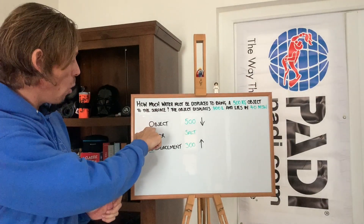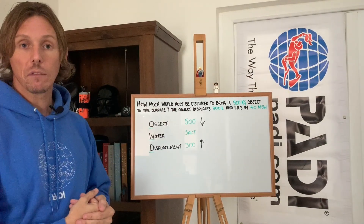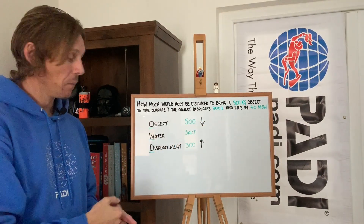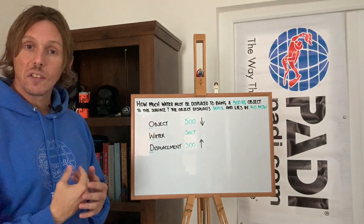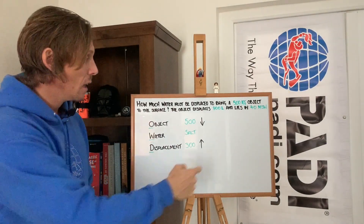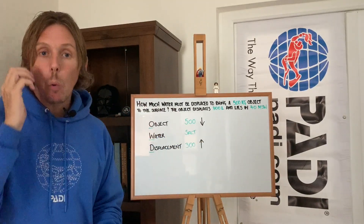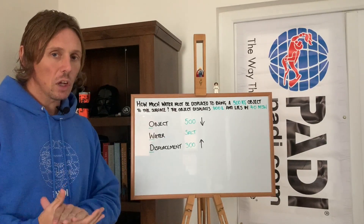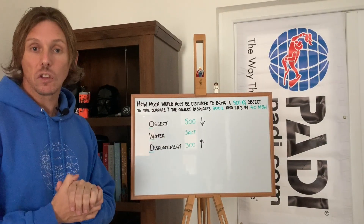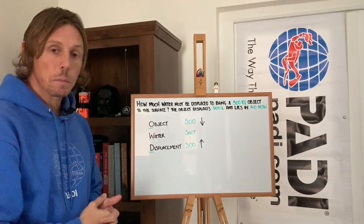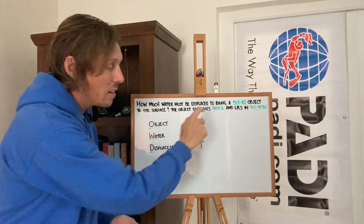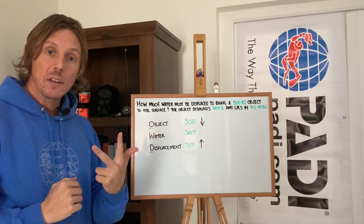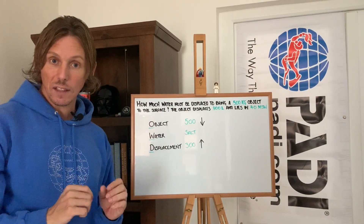Looking at our question: O — object. Does it tell us the weight of the object? Yes, it does — 500 kilograms. W — water. Does it say what kind of water the object sits in? Yes — 40 metres of seawater. The depth is irrelevant; it's only salt or fresh that we need to know, and it tells us salt water. D — displacement. Does the question give us that? Yes — 300 litres. We now have all three pieces of information, and that's all you need to answer this question.